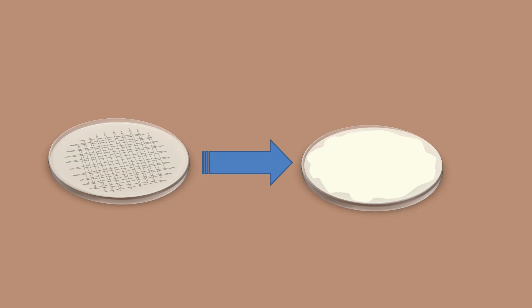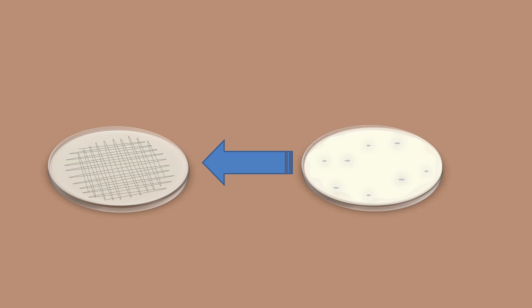To test his theory, Twort spread some of the smallpox vaccine onto nutrient agar plates and then incubated them. Not surprisingly, he reported seeing lots of bacterial growth on his plates. When Twort examined his plates using a magnifying glass, he saw tiny glassy areas that were void of bacterial growth, which today we call plaques. He soon discovered that these plaques contained dead bacteria.